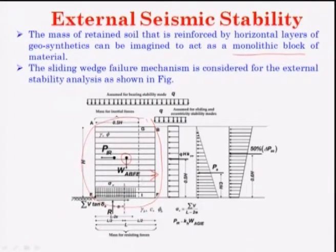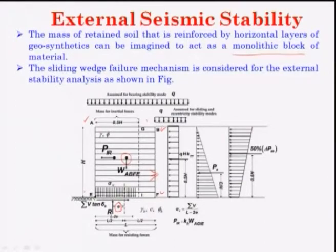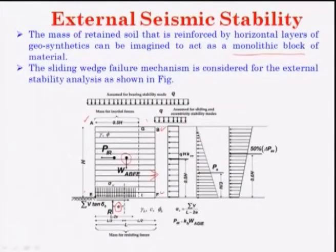The weight will act vertically on the block ABFE. If I consider this mass of soil reinforced by geosynthetics, there is a resultant force which will act at a distance of eccentricity E from the CG. The horizontal force is your summation of V·tan(δ_B), where δ_B is the coefficient of friction of the soil mass at the base. The earth pressure distribution diagram also considers surcharge Q.